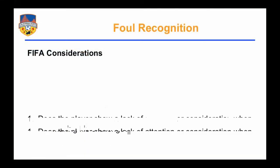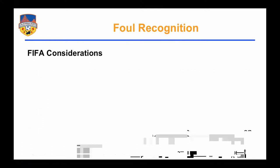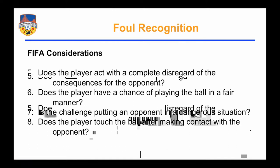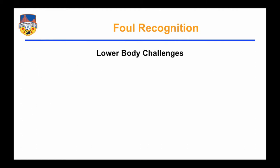Just a quick reminder of the considerations before we get in. Does the player show a lack of attention and consideration when making his challenge? Does the player act without precaution? Does the player make fair or unfair contact with the opponent after touching the ball? Does the player act with complete disregard of the danger or consequences for his opponent? Does the player have a chance of playing the ball in a fair manner? Is the challenge putting an opponent in a dangerous situation? And does the player touch the ball after making contact with the opponent? These are all things to keep in mind as we get into discussions of upper body challenges.